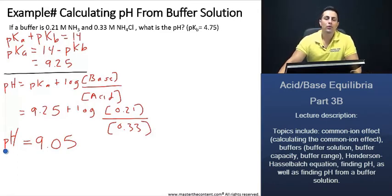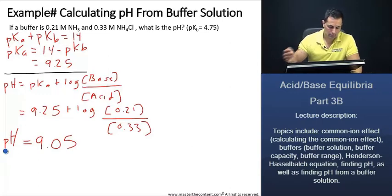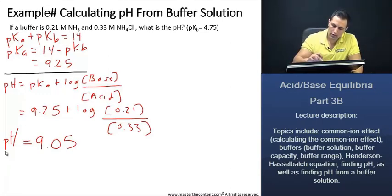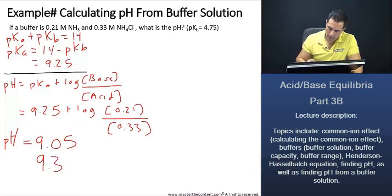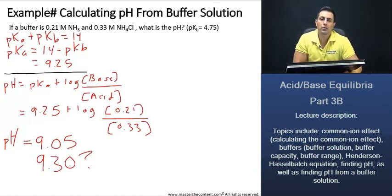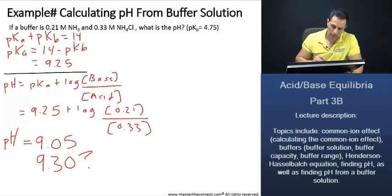Now, what if we wanted a pH solution of, let's say, 9.3? What would be the mole ratio here for our ammonia and our ammonium then? Well, let me show you how to calculate that.